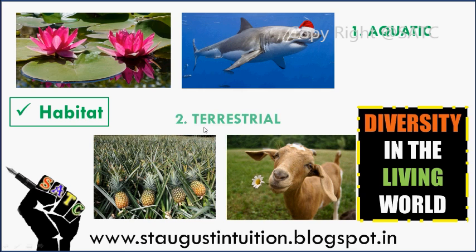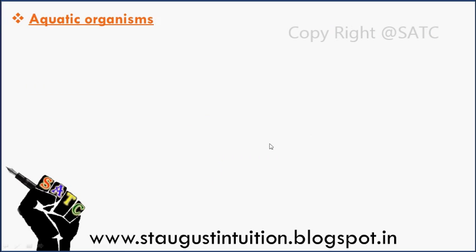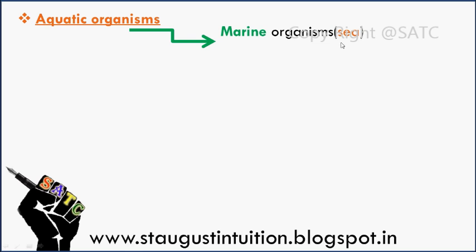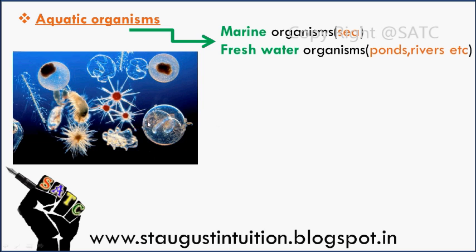Aquatic versus terrestrial. Terrestrial is land. Aquatic organisms are marine organisms or fresh water organisms — ponds and rivers. For example, plankton — they float on water.